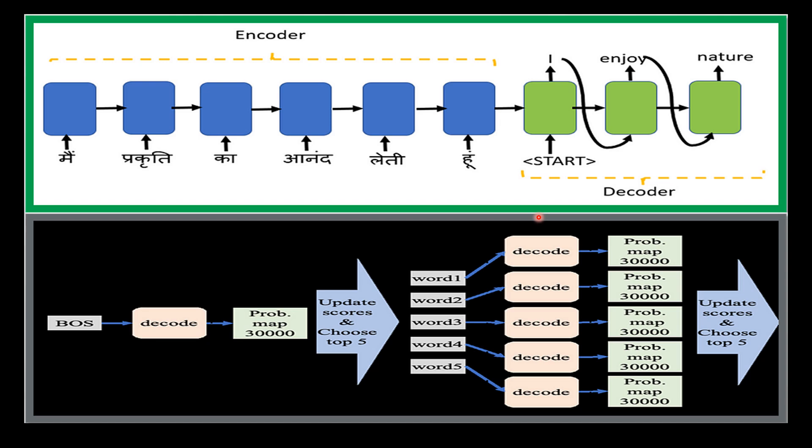Continuing with the previous example of completing a sentence, beam search would maintain a set of top k most likely completions for the given context 'The cat sat on.' At each step, it would consider the most likely next word for each of the k sequences.